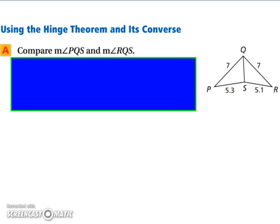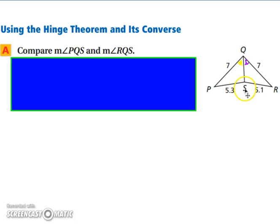Let's use the hinge theorem and its converse. We're going to compare the measure of angle PQS and the measure of angle RQS — which one is bigger? Well, PQ is the same length as RQ, and QS is the same length as QS. We can now look at our third side. PS is the larger side, so therefore the measure of angle PQS is going to be larger.